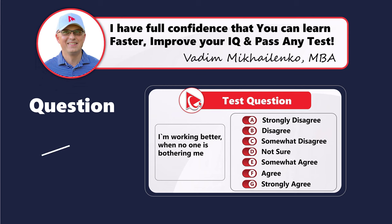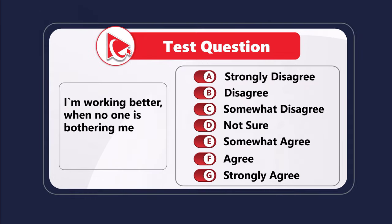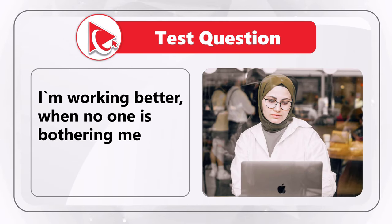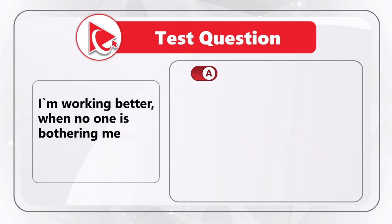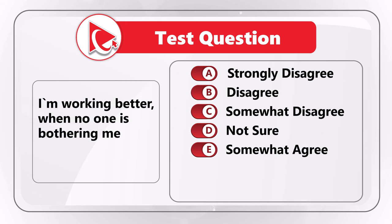Here's a question frequently seen on the test. You're presented with the statement: 'I'm working better when no one is bothering me.' You need to select your answer from seven choices: A: strongly disagree, B: disagree, C: somewhat disagree, D: not sure, E: somewhat agree, F: agree, and G: strongly agree.